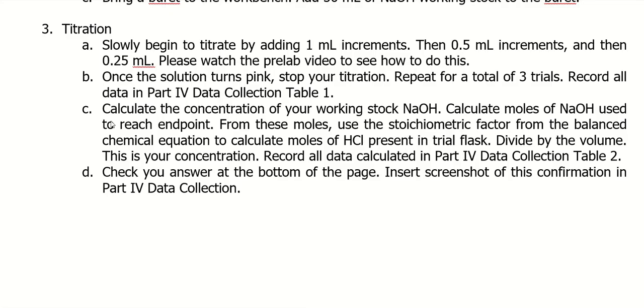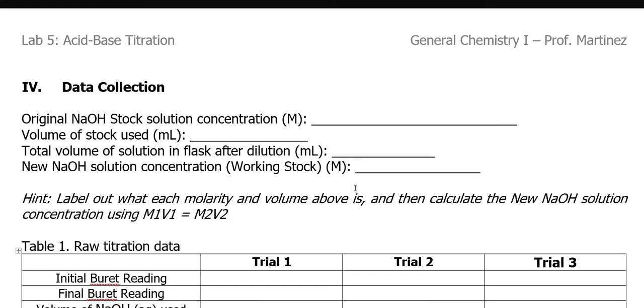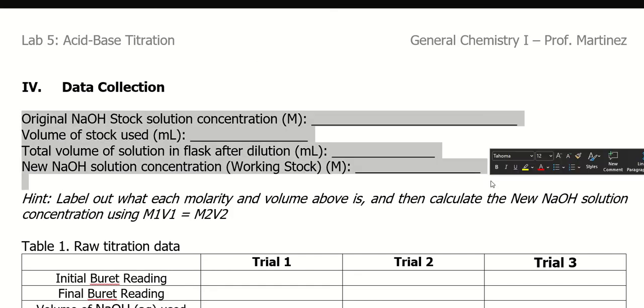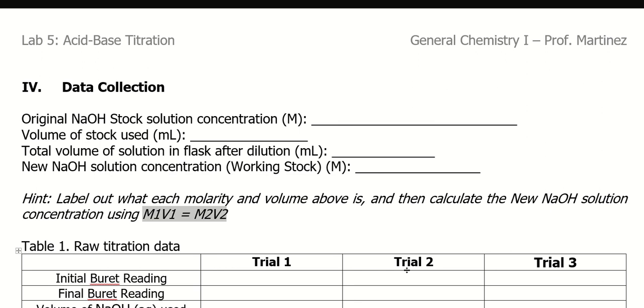So we are going to calculate the concentration first of our working stock. You made it, but you don't actually know the concentration. So we need to sit back. We need to kind of come back and figure that out first. From there, we will be able to do our stoichiometry to determine the concentration of our unknown acid or unknown concentration of our acid is what I meant. So here's the first part. You are determining the concentration of your working stock that you made by using M1V1 equals M2V2. So this is your dilution equation.